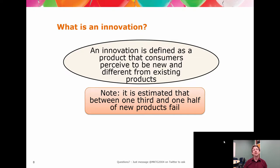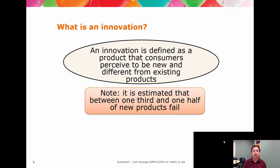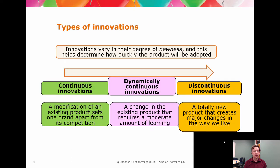When we talk about new products, we're talking about innovations. There are three types of innovations. A key thing about an innovation is it has to have a certain level of novelty — it's got to be new, and a sliding scale of new exists — and it has to differ from an existing product in some way. There are three distinct points on the continuum.